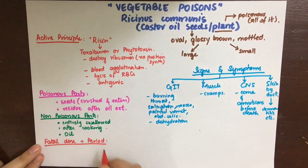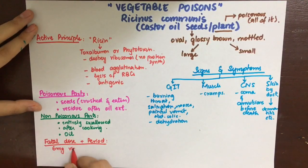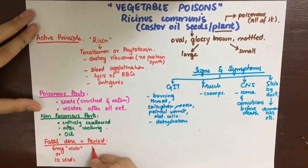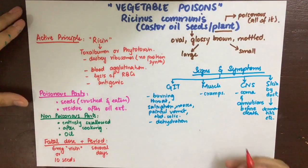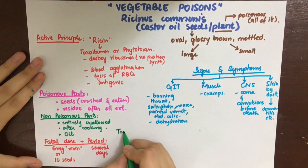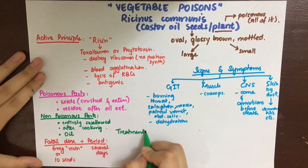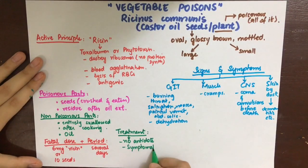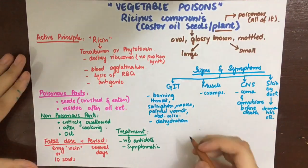The fatal dose of Ricinus communis is about six milligrams of the active principle ricin, or ten seeds are enough to kill a person. The fatal period is several days before death occurs. Treatment is only symptomatic — there is no antidote.